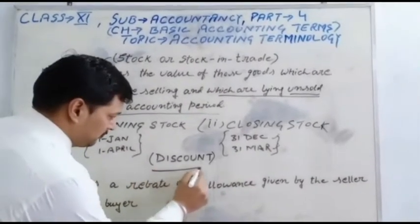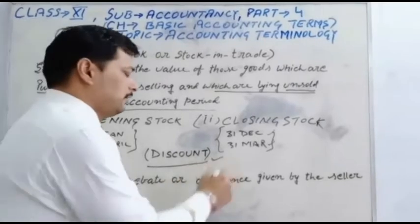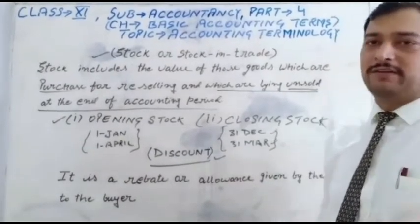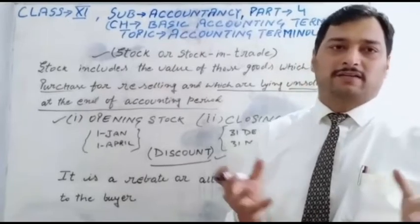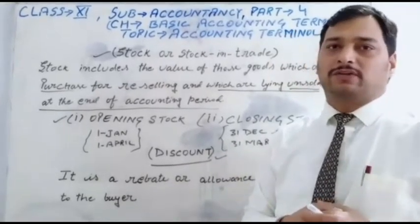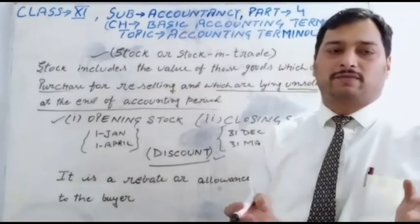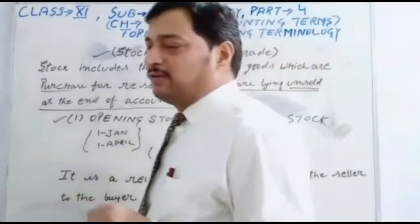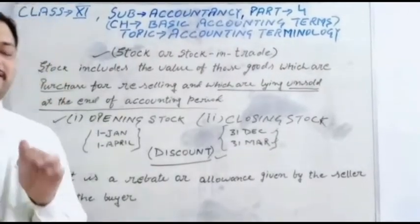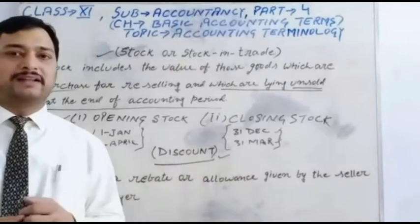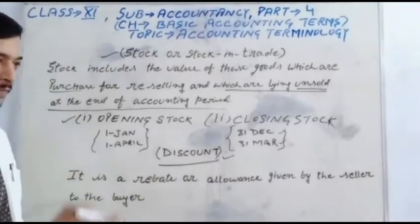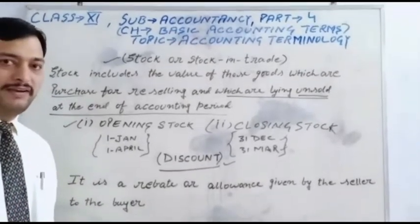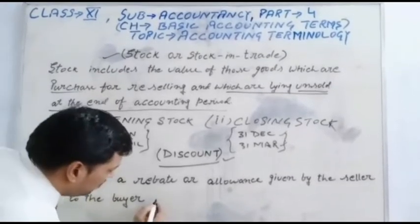Next is discount. You all know very well what is the meaning of discount, but it is an accounting term. Suppose if you are going to a shop for buying some goods for your daily needs, and first you will ask the shopkeeper how much amount will be provided as a discount. So let's see the accounting meaning of discount. Discount is a rebate or allowance given by the seller to the buyer. It is called a discount. So discount is divided into two types.